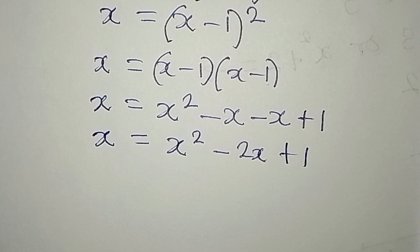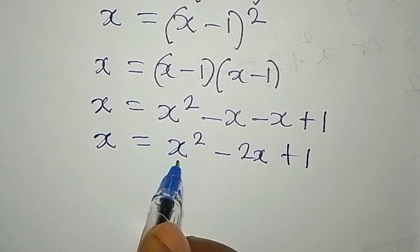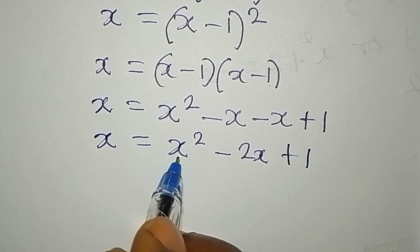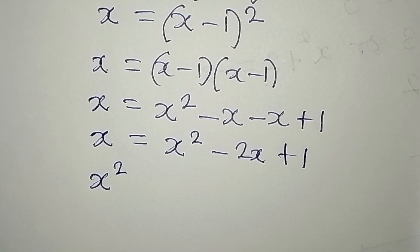So here we have quadratic equation. But it is not well arranged at the moment. And so the one with the highest power, which is x squared, will appear first. We have x squared over there.